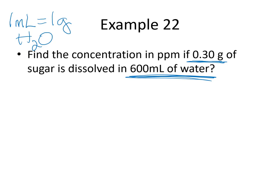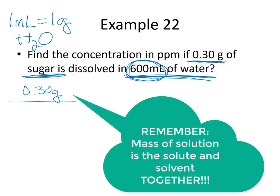So if you would like to try working this out for yourself you can go ahead and do that now. And if not I'm going to work it out for you. So our formula is PPM equals mass of solute over mass of solution times one million. So I'm going to take my 0.30 grams. That's my solute because that's my sugar. And I need to figure out the mass of my solution.